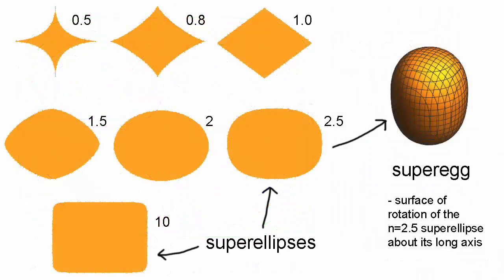The super egg is the surface of revolution of the super ellipse for which n equals 2.5 and a over b equals 6 over 5. Its strangeness becomes apparent only when it's made into a real, physical object — formed, for example, out of wood. As Pete Hyen pointed out, a super egg stood on either end has a peculiar and surprising stability, so much so that playing with one is a rather satisfying experience.